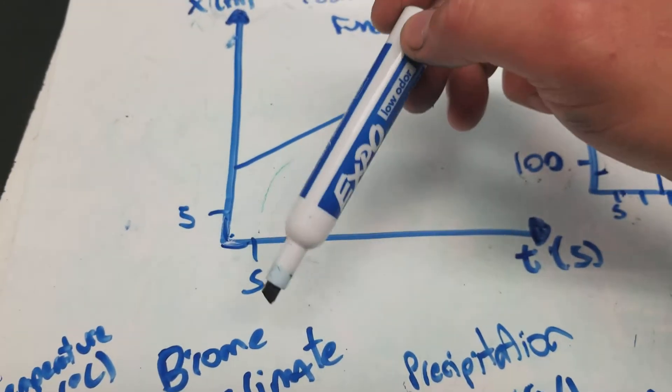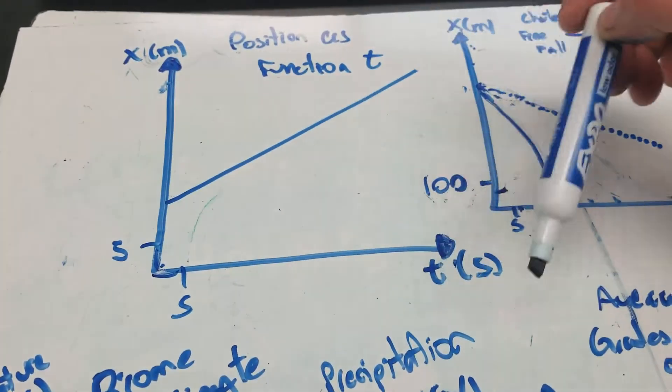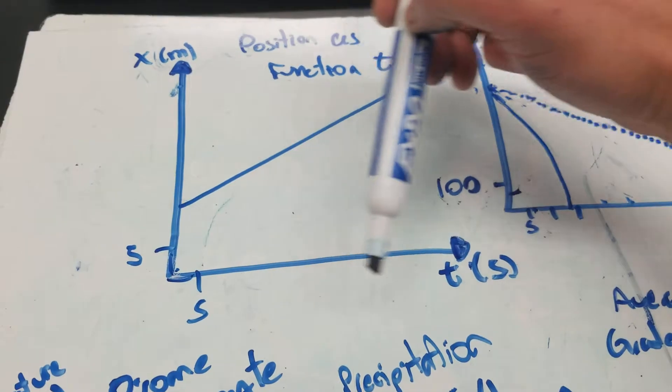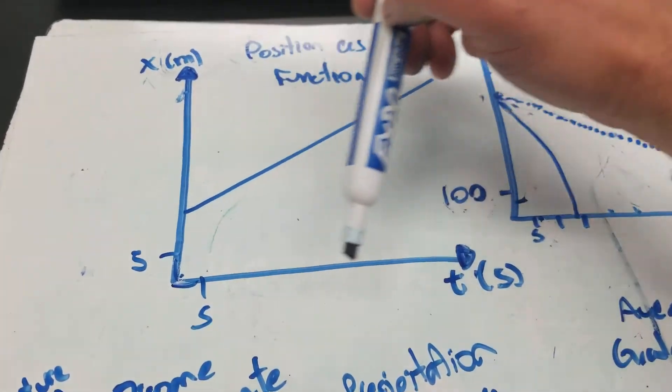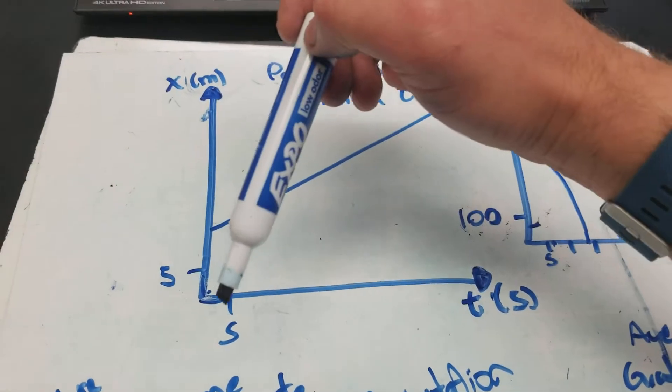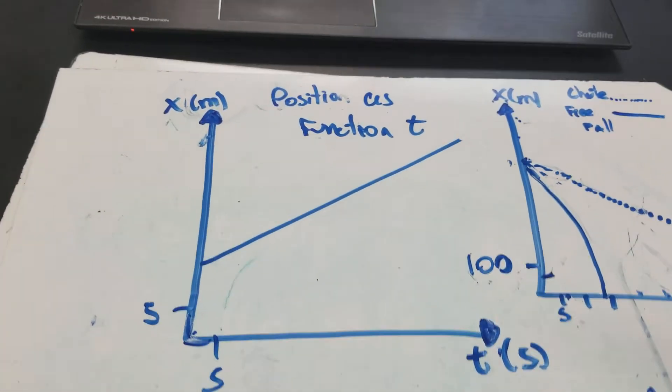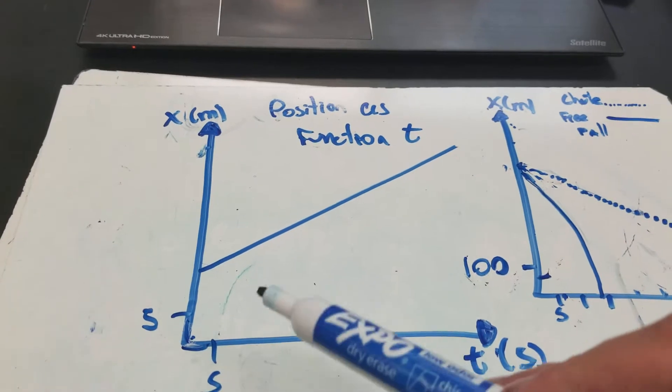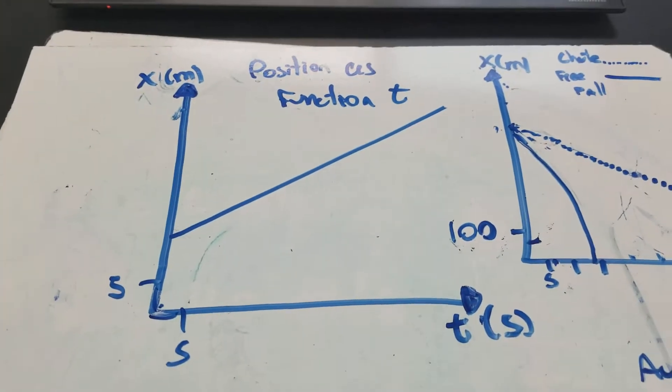You also want to have scales so that you know what represents each section of the axis. How big is that representative in a numerical format, right? So this is an example of a graph you would see in physics, for example, all the time.